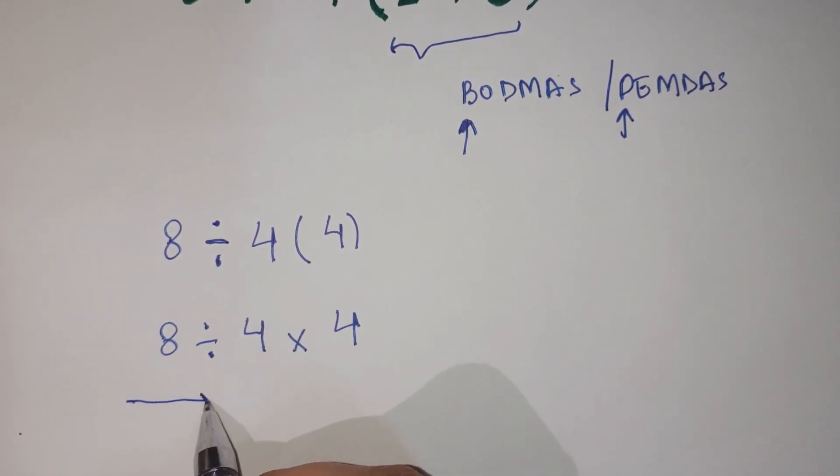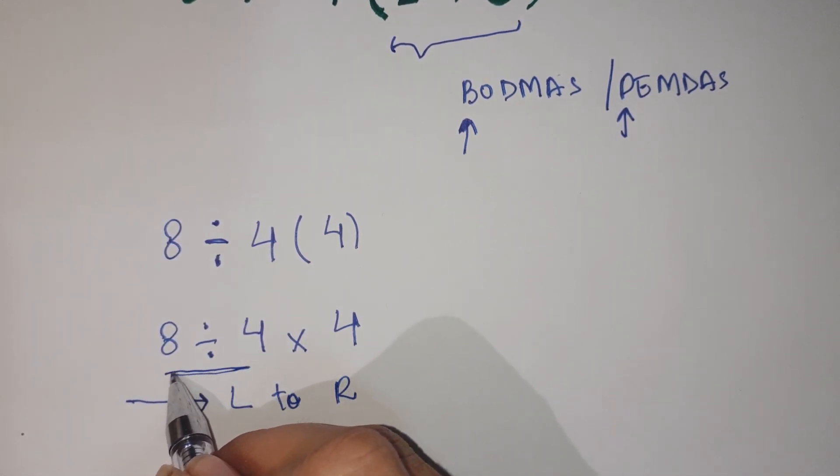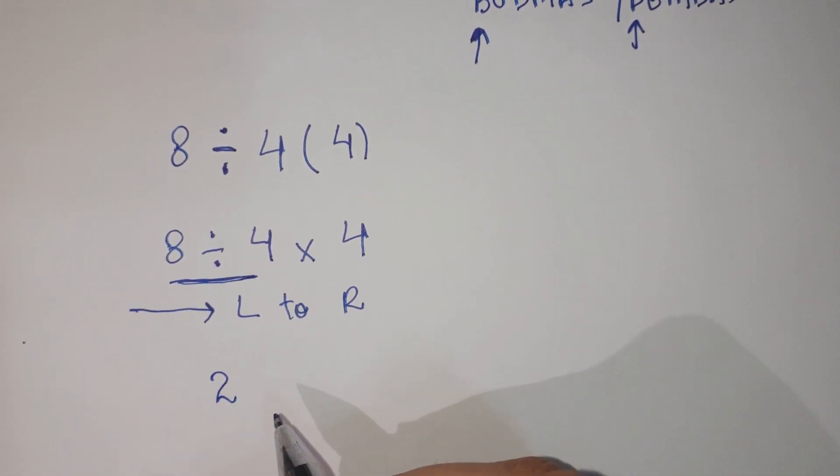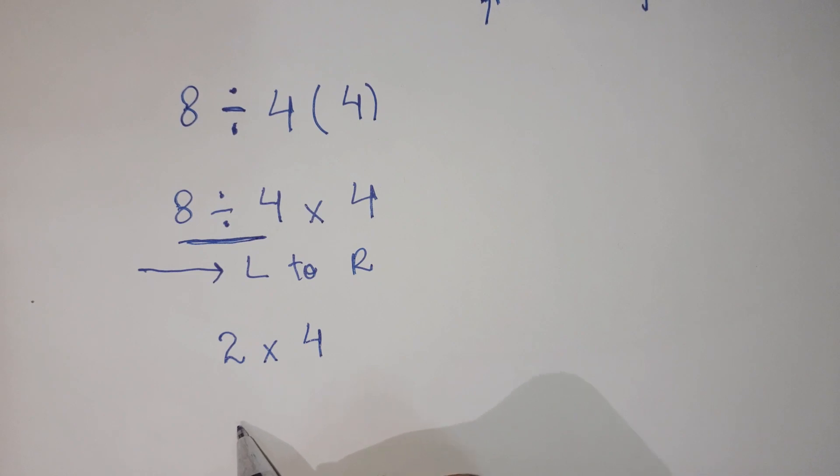So we are going to follow the left to right rule. That means first of all we are going to solve this. That is 8 divided by 4 that is 2. Right? So copy the next term that is 2 into 4 and here you get 8.